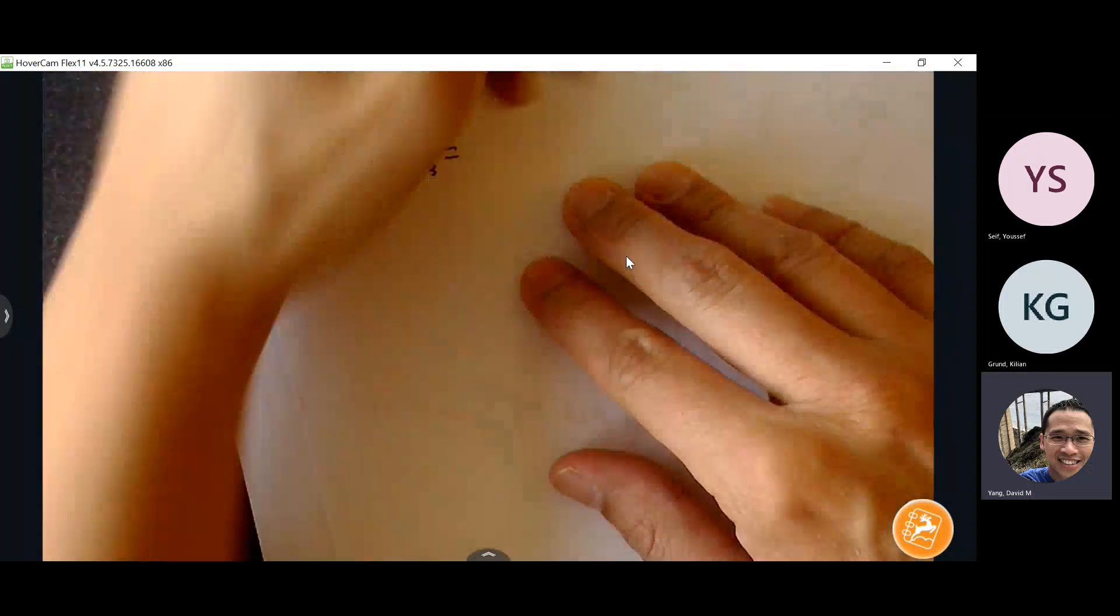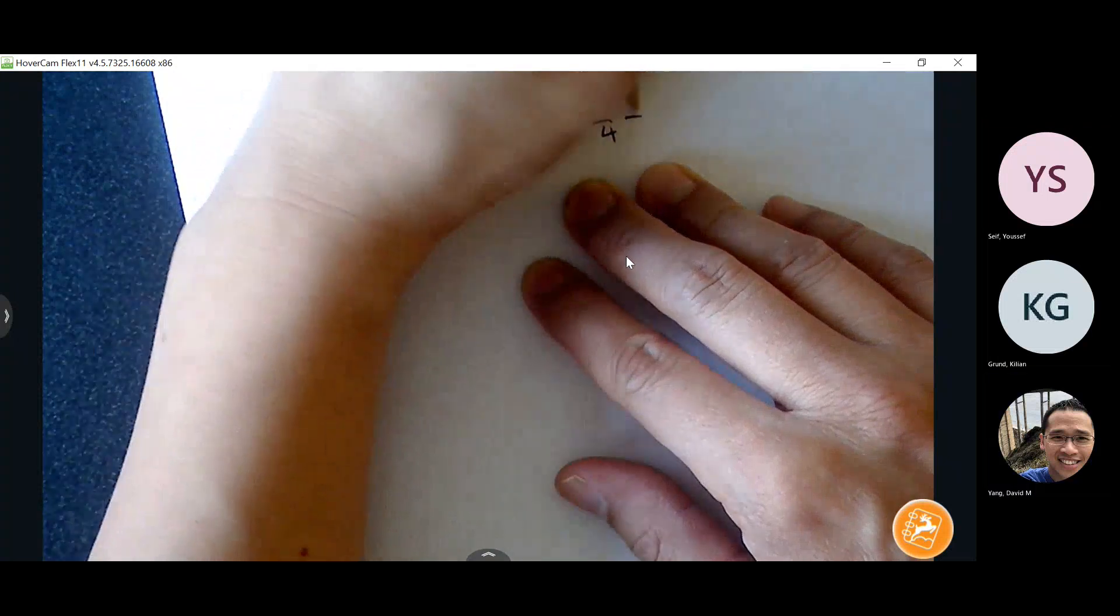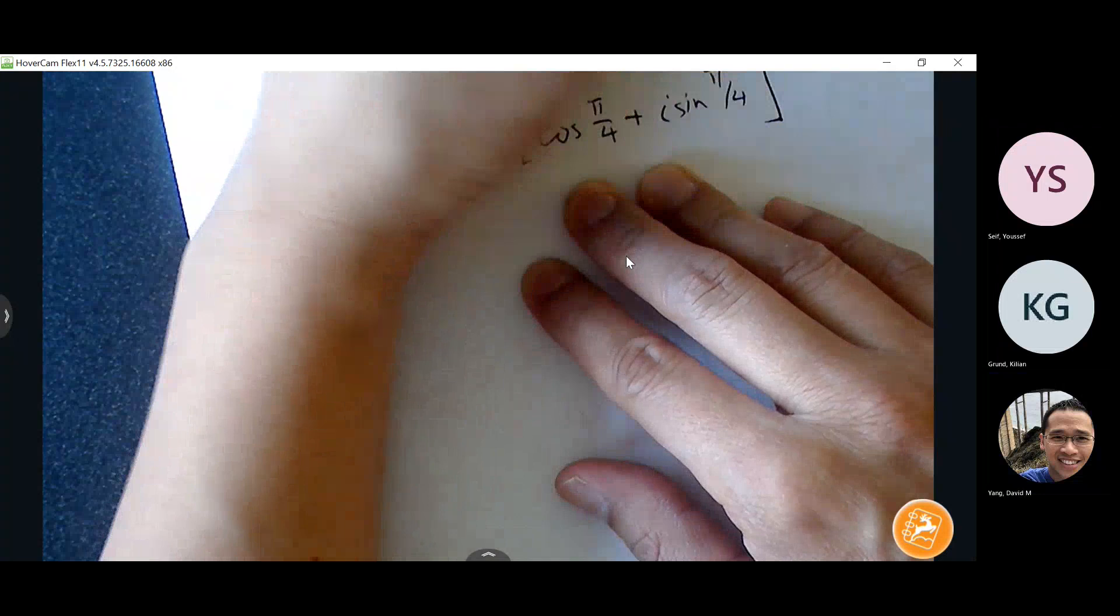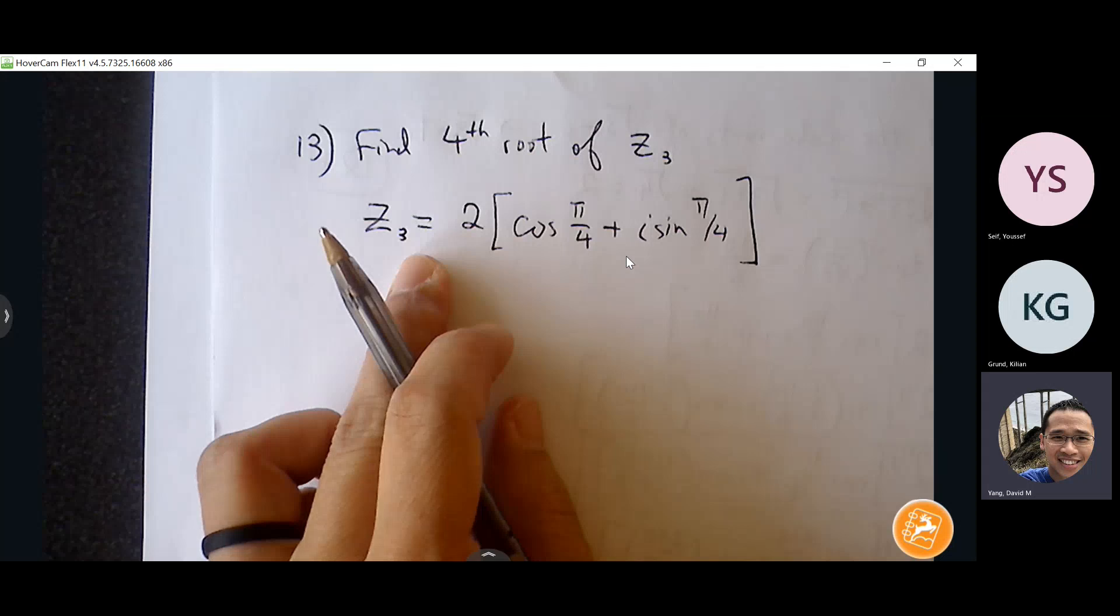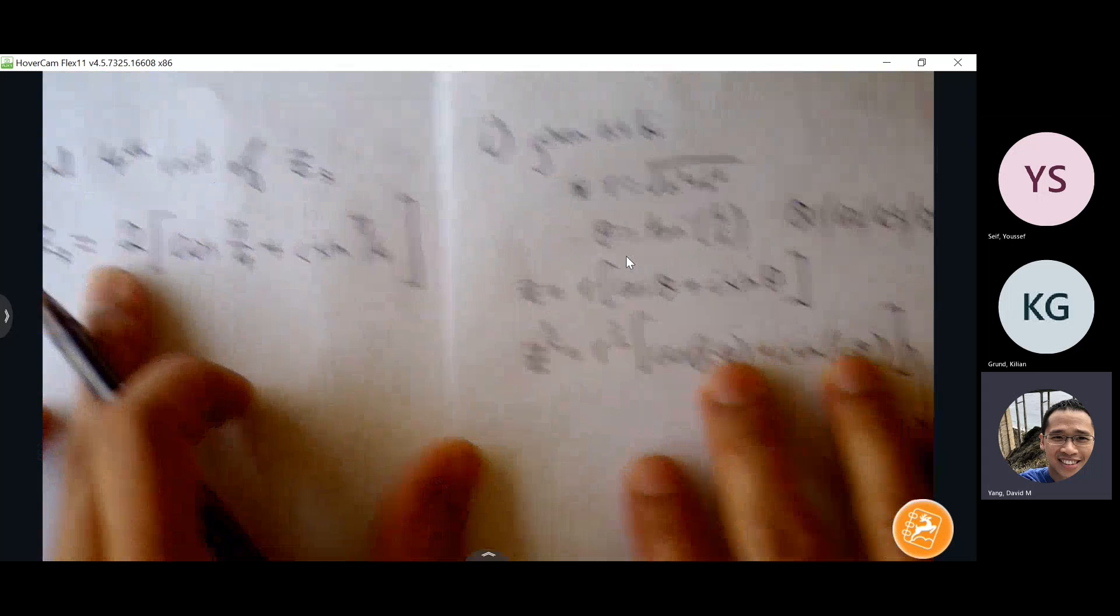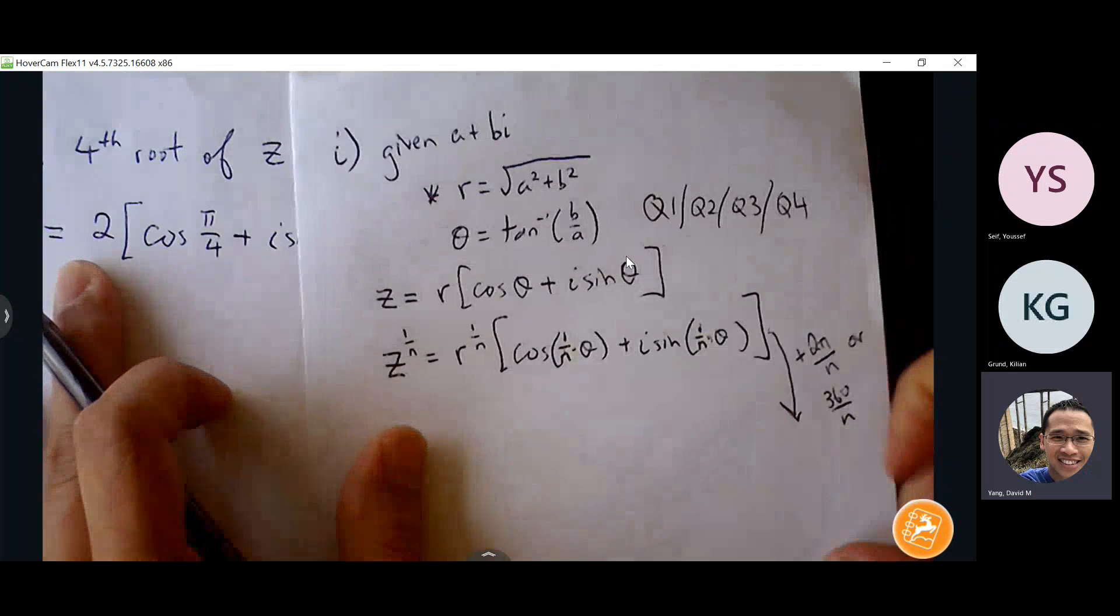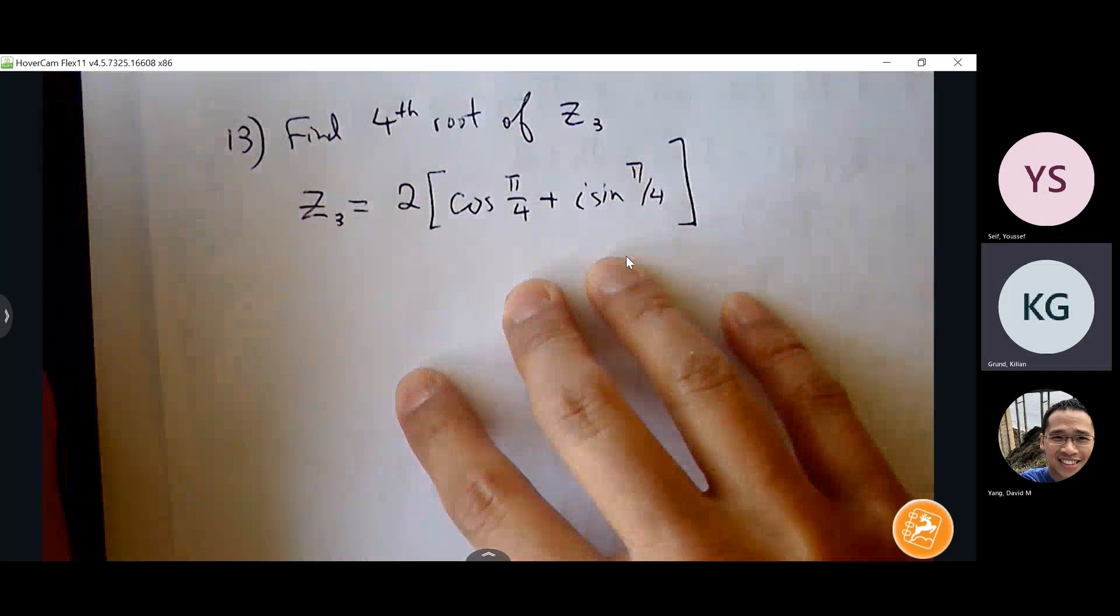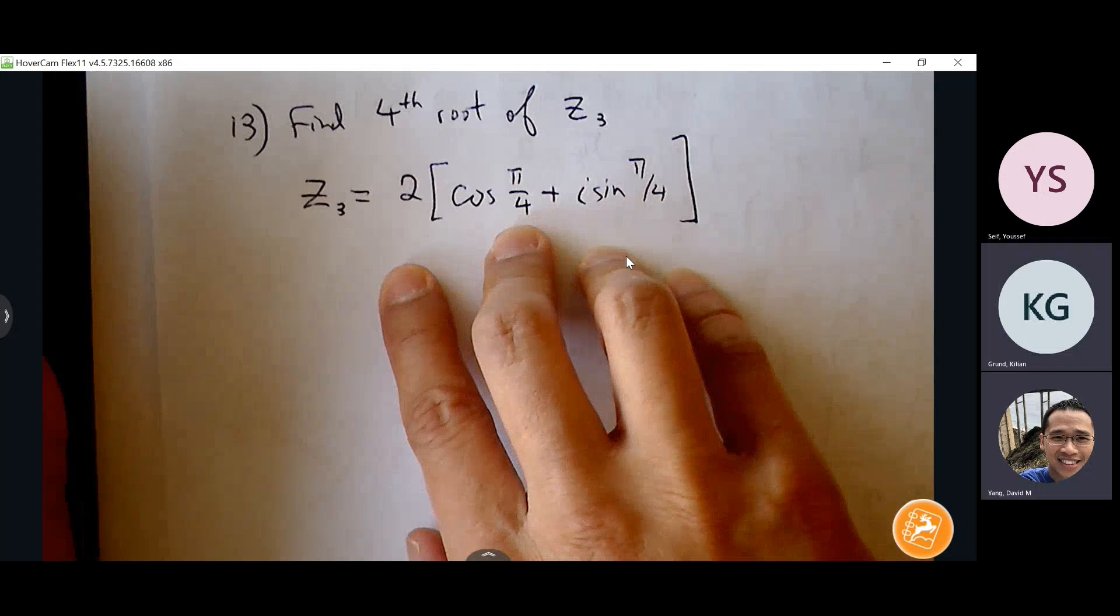And Z3 is 2 cosine of pi over 4 plus i sine of pi over 4. So if the complex number or if the polar form is already given to you, then it saves a step, right? You don't have to find R and theta. You already see R and theta. You just have to build your first complex number and then find your other solutions by going through your pattern. Okay, so you do the same thing you did on 12, but you use one fourth instead of one third. Exactly. And you get four solutions.